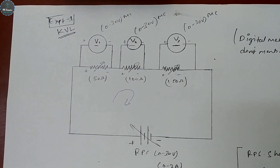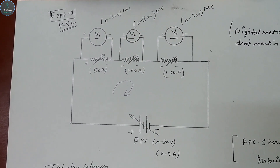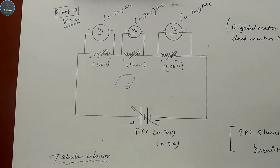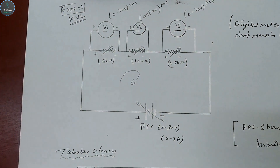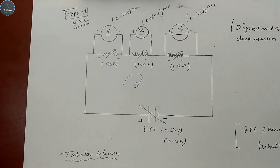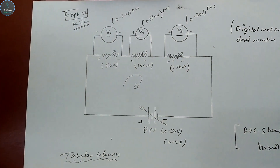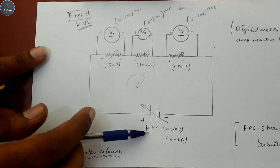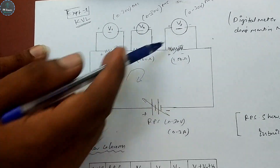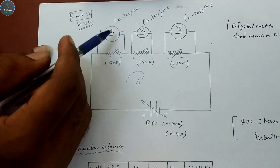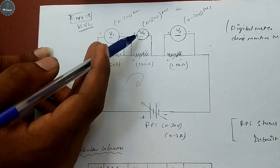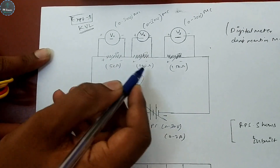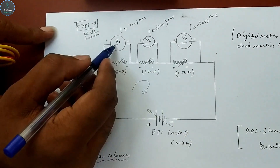Welcome to the basic electrical laboratory. We will conduct the first experiment: verification of KVL and KCL. For KVL, according to the statement, the algebraic sum of voltages around the loop equals zero — meaning the algebraic sum of EMF and voltage drops equals zero. The supply voltage must equal the sum of voltage drops across each rheostat, so the supply voltage equals the sum of all voltmeter readings for KVL to be verified.